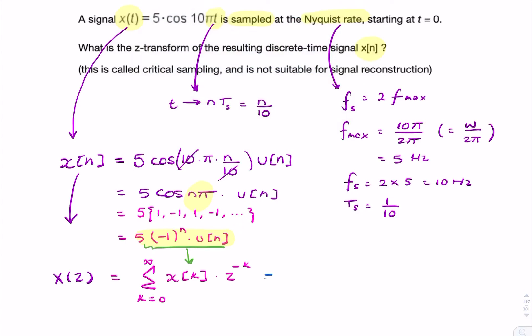And my final answer would be summation from k equals 0 to infinity. I can take the 5 outside, say it's (-1)^k times z^(-k). So that is my z-transform. The question was, find the z-transform. That is X(z).